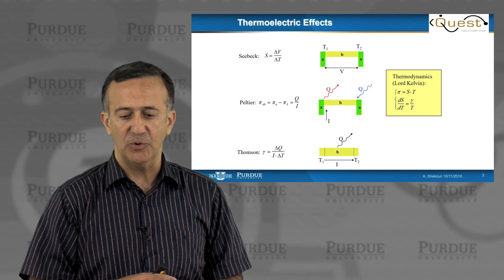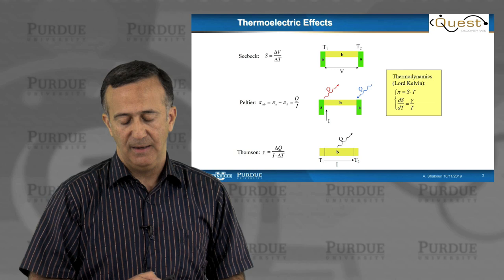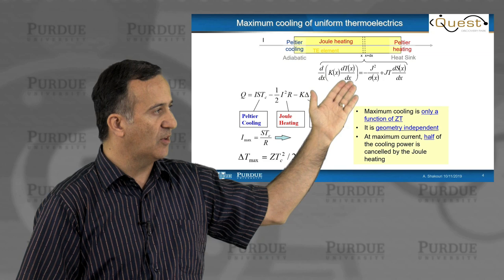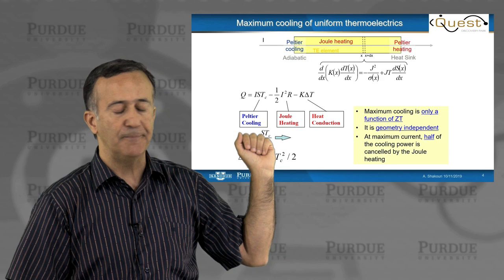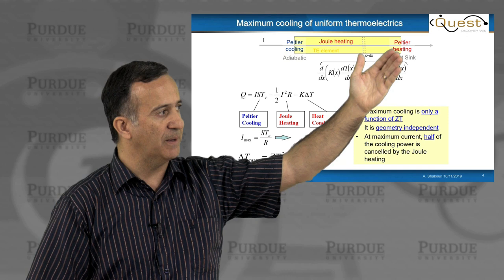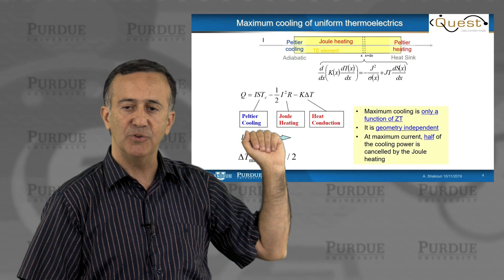But when we actually want to generate electricity or we want to generate cooling and heating, we need to consider a whole system, and that's when material parameters, multiple of them come together. Let's consider the case of a thermoelectric element, this yellow element here, and assume we send the current. Is current going from one side to the other? And depending, of course, on the P or N type, one side of it could be Peltier cooling, the other side of it could be Peltier heating. How do we actually calculate the total amount of cooling?